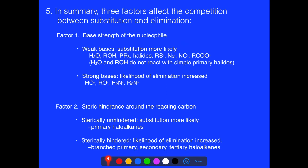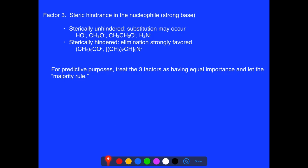Factor three is the steric hindrance around the nucleophile itself. If the strong base is unhindered — simple OH⁻ or RO⁻ — we tend to get substitution. If the base is sterically hindered, like potassium tert-butoxide or LDA, we get elimination strongly favored. So we have three factors: the base strength, the steric bulk around the reacting carbon, and the steric hindrance of the nucleophile.